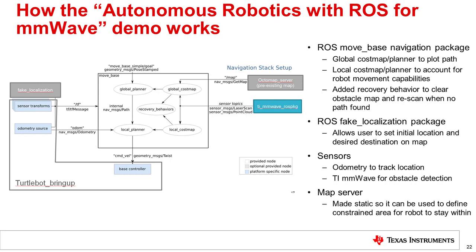The ROS fake localization package, shown in the upper left of the figure, was used to allow users to set the initial location and desired destination on the map for the demo. Robot OS uses information from sensors in its path planning and collision avoidance. Odometry information is used to track the location of the robot to know where it's moved and its current orientation. For this lab, we have integrated the TI mmWave sensor as the 3D sensor for collision avoidance. The map server, shown in the upper right, was made static so that it can be used to define a constrained area for the robot to stay within for the demo.